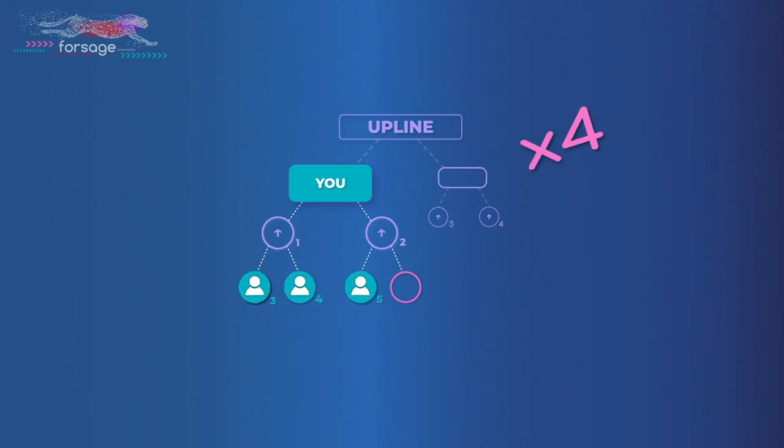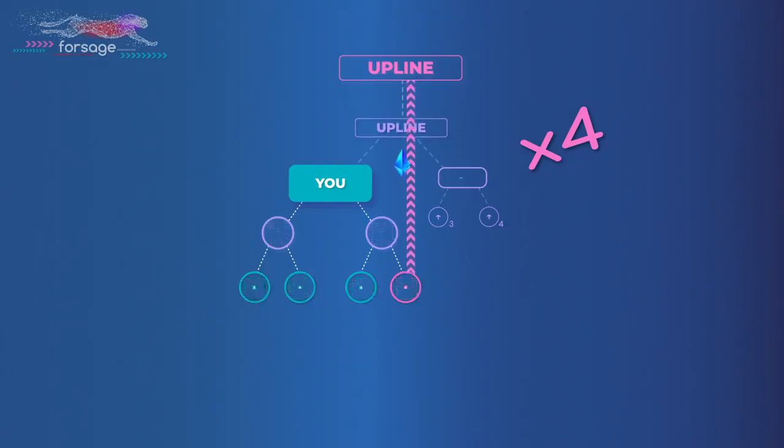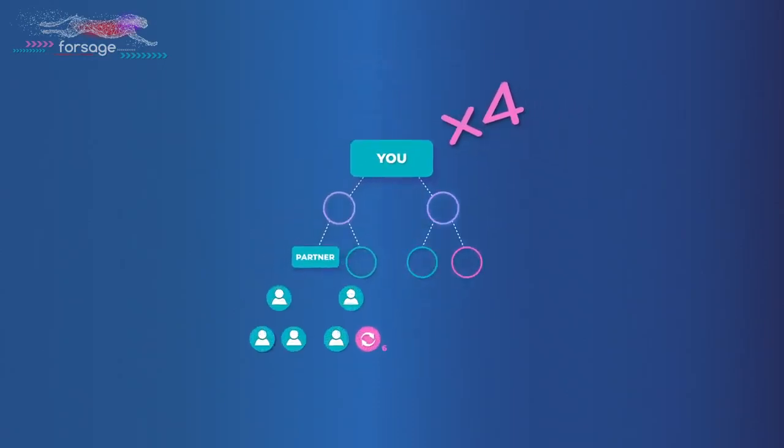Three payments of 100% are instantly sent to your wallet. The last payout closes the slot, and it reinvests, buying you the same slot again. Your partners also go for reinvestment, and 100% of the payment for the last place of their slot is transferred to your wallet.